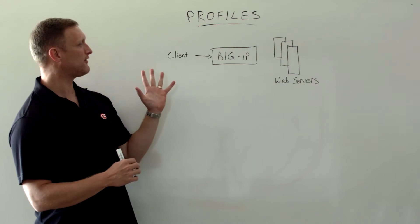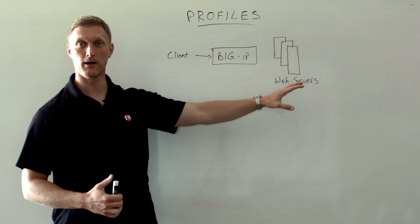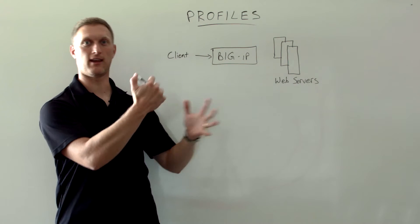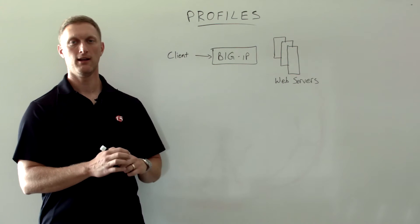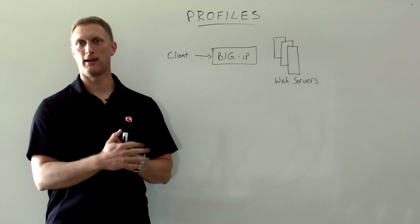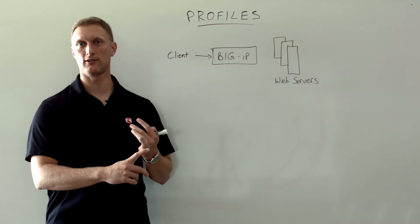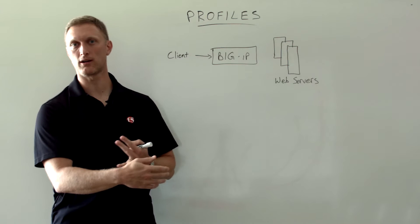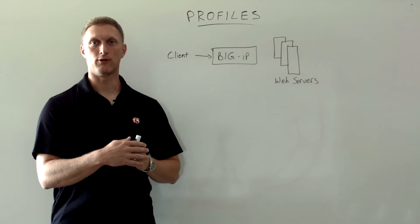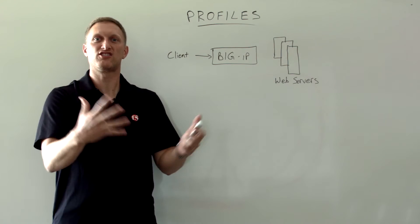Imagine this scenario: you have a client accessing the BIG-IP, and you ultimately want to get back to your web servers. The BIG-IP is going to manage all this application traffic for you. Today's world is really complex. In networking environments, there are a lot of different services you may be running, different protocols you could use — you may be doing SSL for encryption, authentication, there's a lot of different stuff going on.